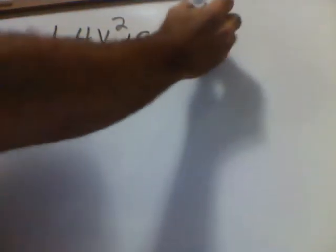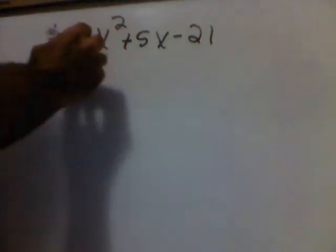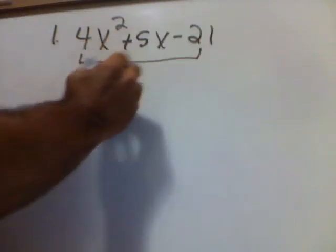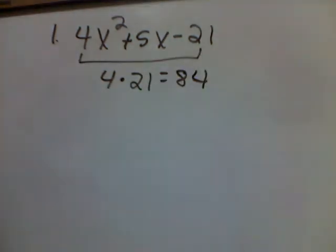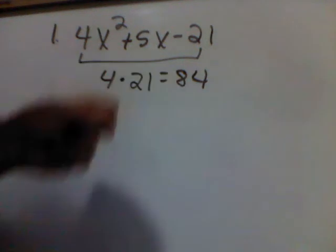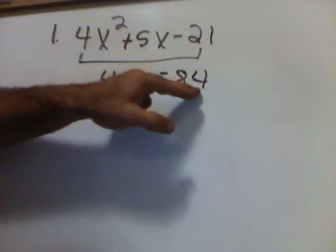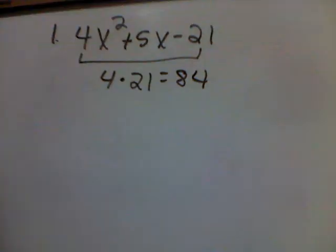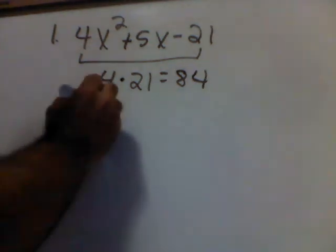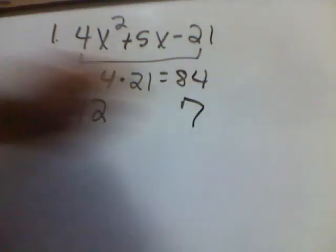First problem: 4x squared plus 5x minus 21. On my method, we multiply the first number times the last. That gives me 84. Now I use 84 temporarily as my last number. I want factors of 84 that subtract and give me 5. All right, factors of 84 that subtract and give me 5 are 12 and 7.